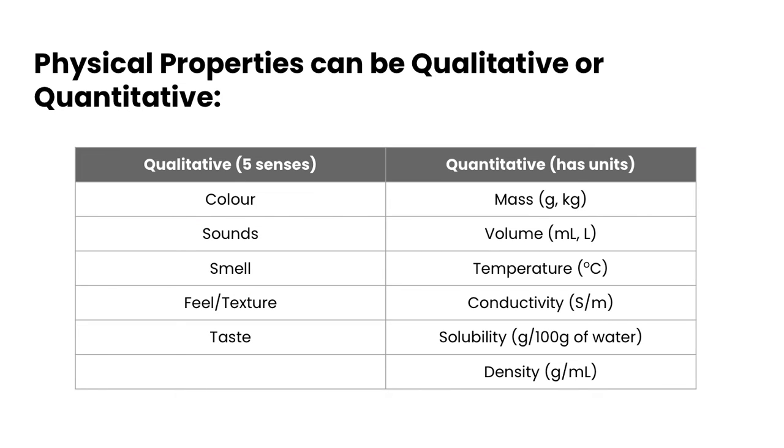Physical properties can also be broken down into qualitative or quantitative properties. Just reviewing these two terms: qualitative really depend on your five senses, so what you see, hear, smell, feel, or taste. Whereas quantitative are numbers based or numbers driven, and these types of properties will have units associated with them.